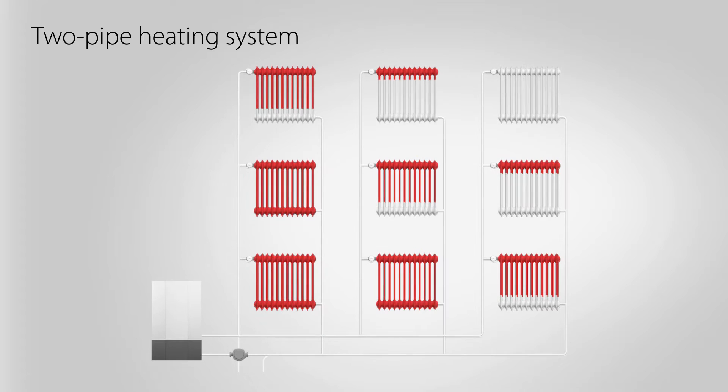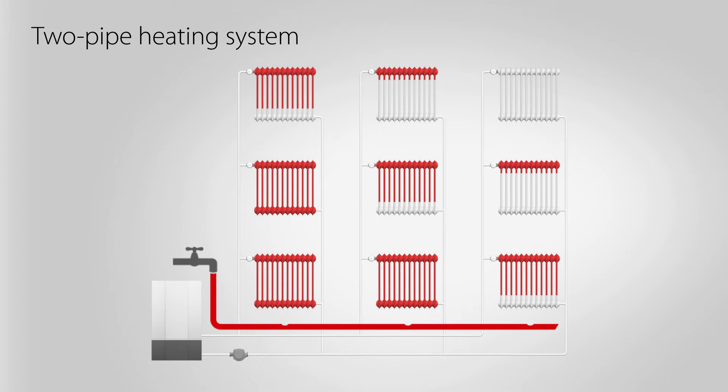To simplify, the water flow in an unbalanced heating system can be compared to how water is distributed from a water hose. Ideally, all flows should be similar to the design flow. However, this will not happen in unbalanced systems.